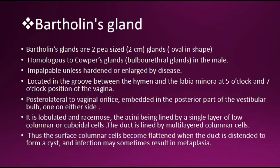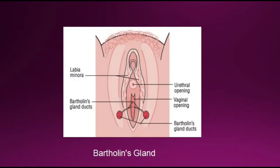Bartholin's glands are impalpable unless hardened or enlarged by disease. They are located in the groove between the hymen and the labia minora, at the 5 o'clock and 7 o'clock position of the vagina, posterolateral to the vaginal orifice, embedded in the posterior part of the vestibular bulb, one on either side. You can see the Bartholin's glands on both sides — the labia minora, the vaginal opening, and the glands and ducts on both sides.